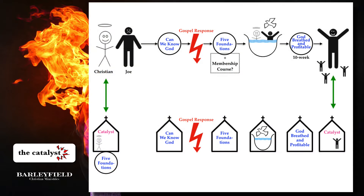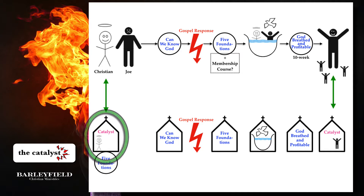Let's talk about how this could actually work in practice, because this has some implications for you as a local church. As you look at the diagram of this discipleship journey, you now see a church at the bottom level supporting this journey which individuals are on at the top level. This church is now enabling evangelism and enabling early discipleship — so number one, they are regularly running the Catalyst Course.